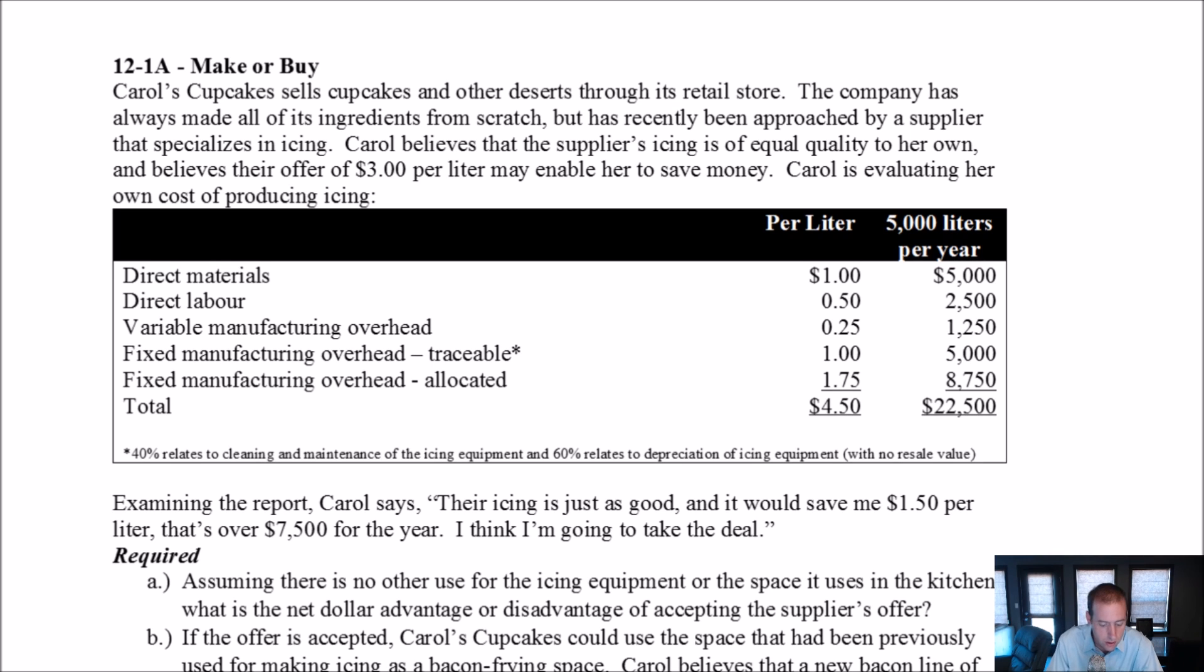So Carol's Cupcakes sells cupcakes and other desserts through its retail store. The company has always made all of its ingredients from scratch, but has recently been approached by a supplier that specializes in icing. Carol believes that the supplier's icing is of equal quality to her own. And that's important. If the supplier's icing was of lower quality, we wouldn't even consider it, but it's equal quality. And believes their offer of $3 per liter may enable her to save money. So the supplier shows up with icing that's just as good as Carol's. And they say, look, it's $3 a liter. And she thinks it costs me more than $3 to make it.